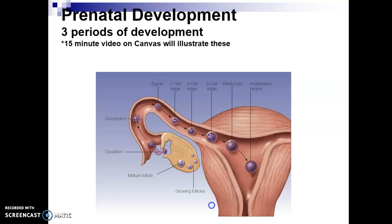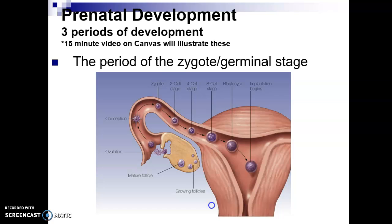Some of the things I wanted to highlight were that there are three periods of development. The very first period is the period of the zygote. This is when the egg meets the sperm, and it goes up until implantation begins.